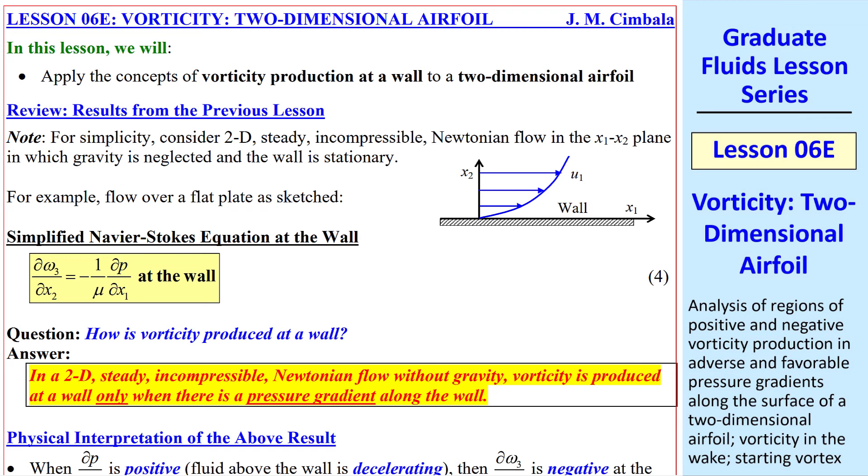First, a quick review. We're going to consider only 2D, steady, incompressible Newtonian flow, and we'll limit our discussion to the two-dimensional X1, X2 plane. When we have a wall, the wall will be stationary, and we'll ignore gravity.